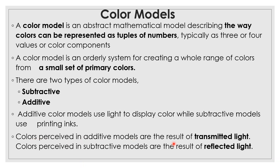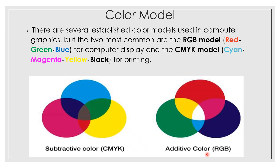Additive color models are the result of transmitted light, and subtractive models are the result of reflected light. There are several established color models used in computer graphics, but the two most common are the RGB model for computer displays and the CMYK model for printing.